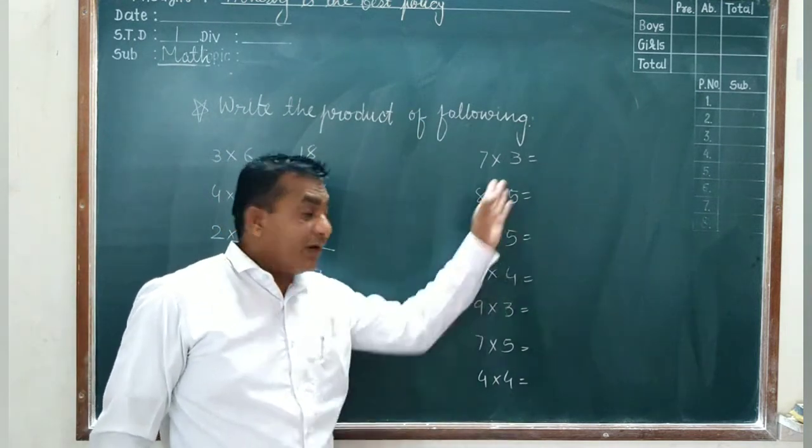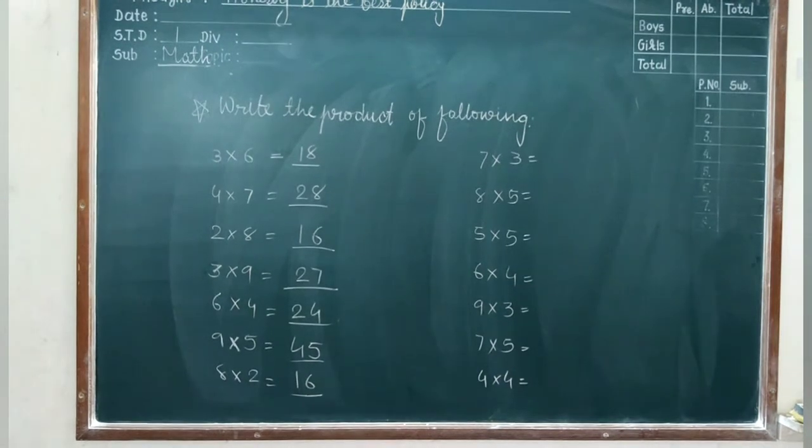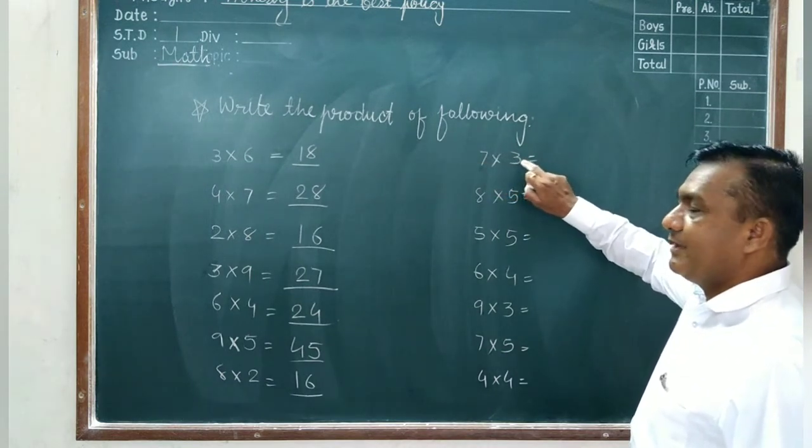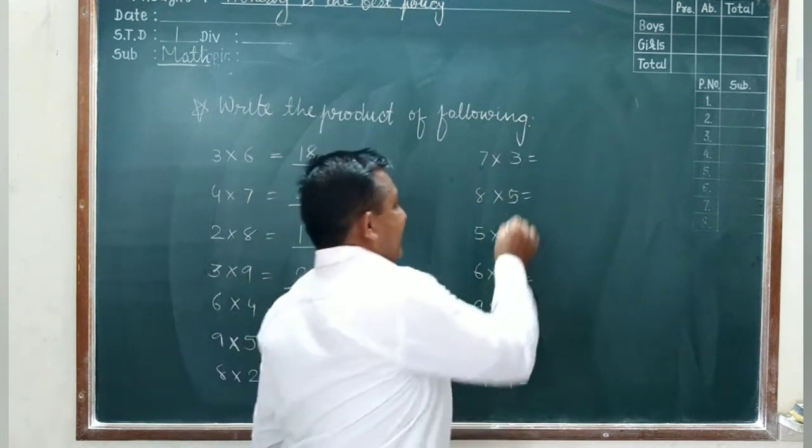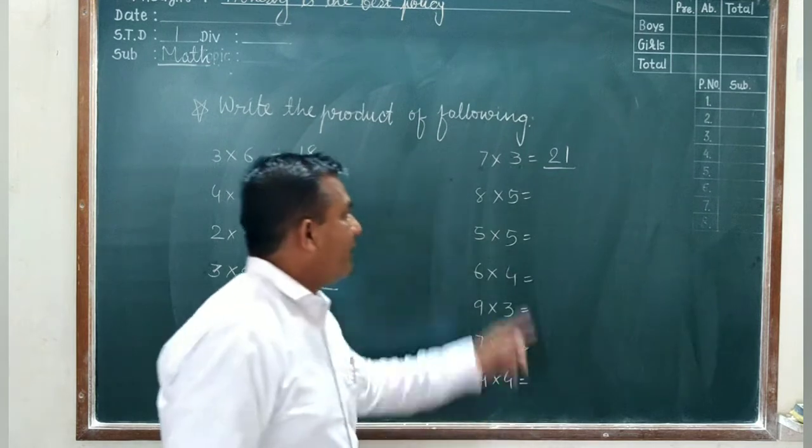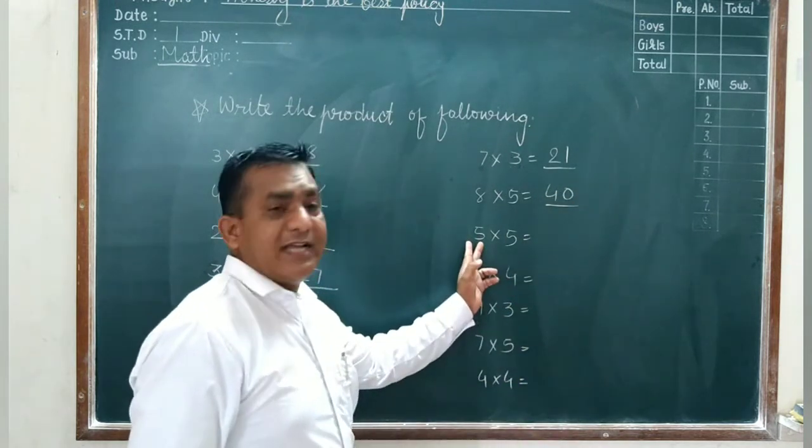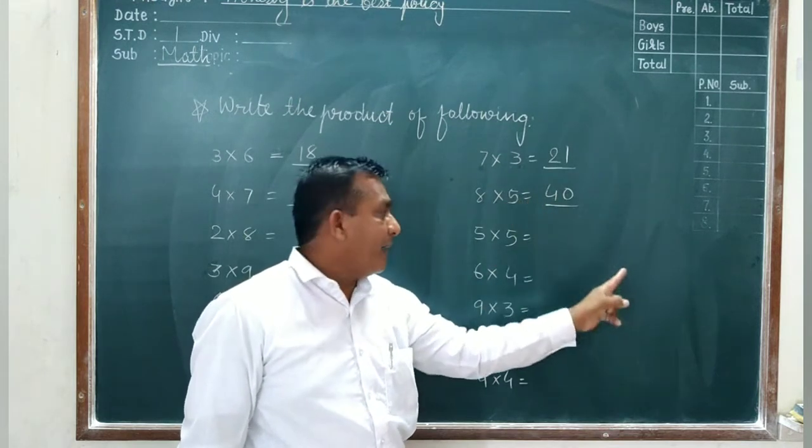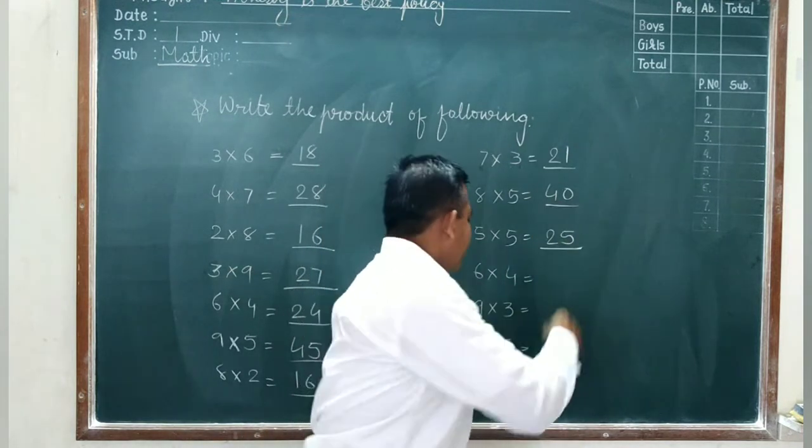Now 8 twos are, means 2 eights are 16. So now you solve 6 sixes, so you have to solve yourself. First you count yourself, after I show you. Now you write this. Now what we do here? First you speak the three table. Three sevens are. Yes, seven threes are. But always you speak the easy table. Three sevens are 21. You write here answer 21. Eight fives are, you speak here five eights are 40. You write the answer 40. Five fives are 25.